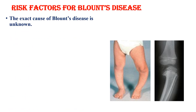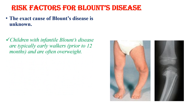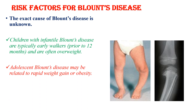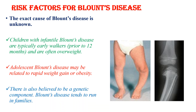Regarding risk factors, the exact cause of Blount's disease is unknown. Children with infantile Blount's disease are typically early walkers, meaning before one year of age, and are often overweight. So obesity and early walking are risk factors for the infantile type. Adolescent Blount's disease may appear related to rapid weight gain or obesity. There is also believed to be a genetic component, as Blount's disease tends to run in families.